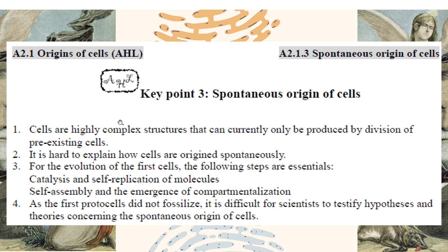Because cells are highly complex structures. Even nowadays, with our technology, we can't produce one cell. We've only known the division of pre-existing cells — not yet. So the process is still unknown to us, and it is hard to explain how cells originated spontaneously. We know the steps, we know what needs to go through. For example, for the first cell to evolve, the following steps are essential: catalysis and self-replication of the molecules. The cell has to know how to replicate by itself, then these molecules have to assemble and be separated from the surroundings — they have different chemical environments, so you have to have compartmentalization. We'll talk about it later. Very important.